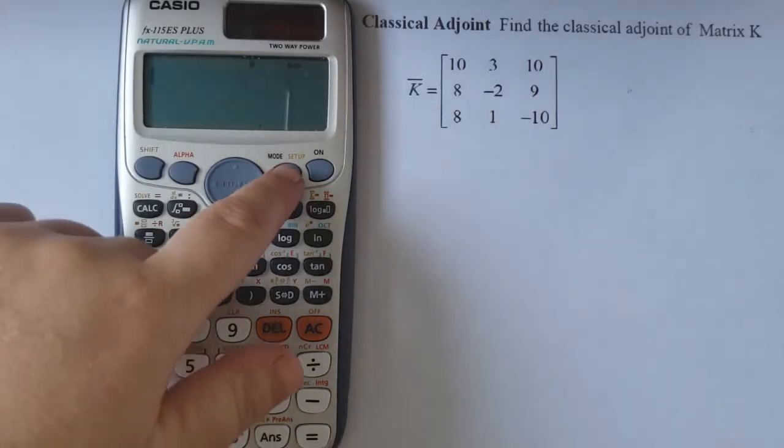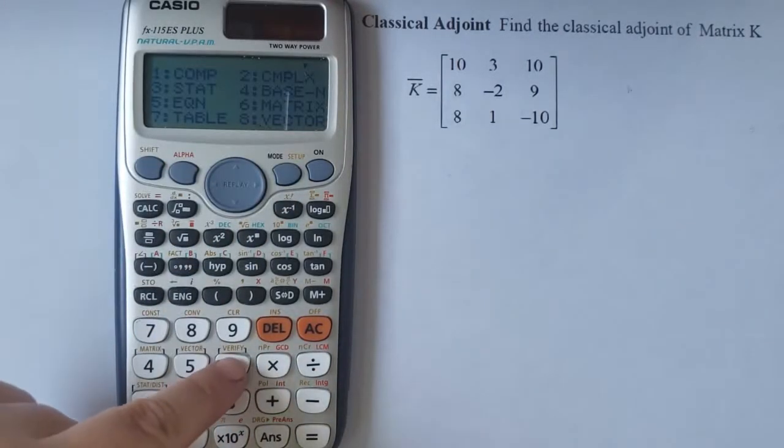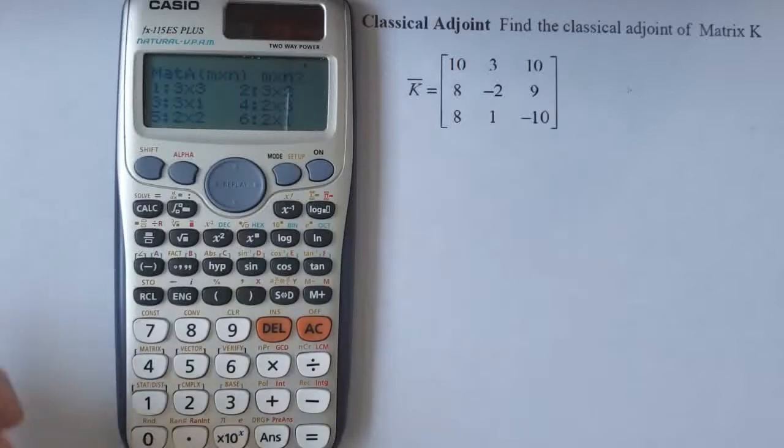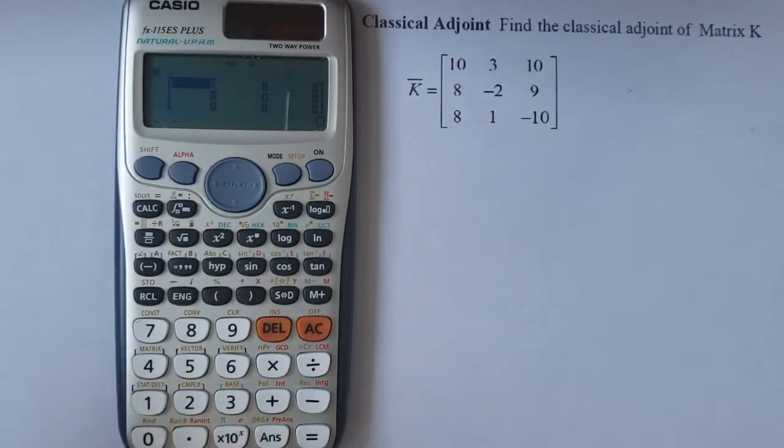I go to the menu button and then I press 6 for matrix. I choose 1 for matrix A. I will choose the first option, 3x3 matrix, by pressing 1.